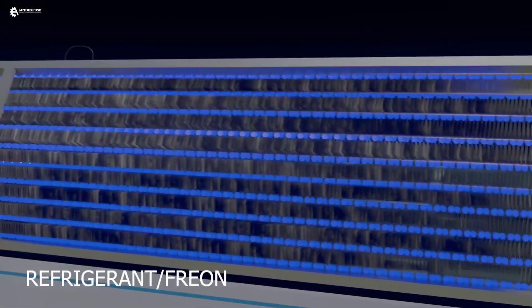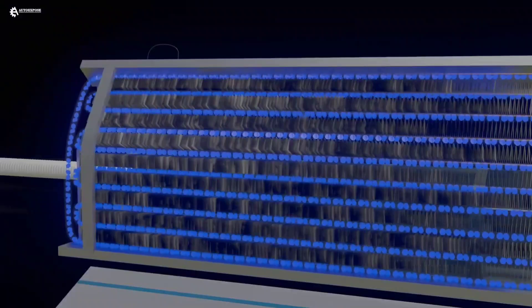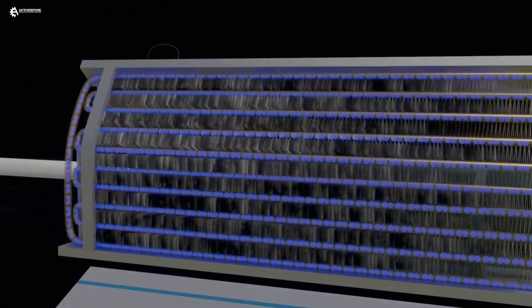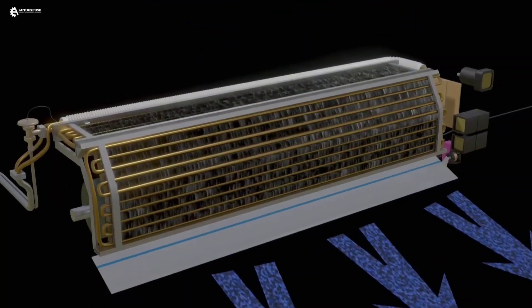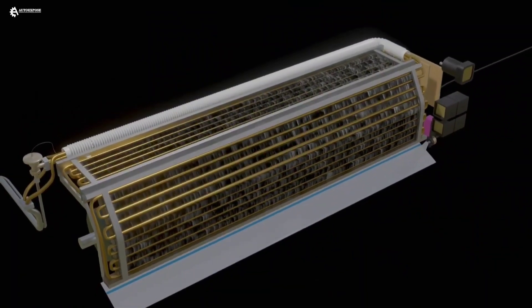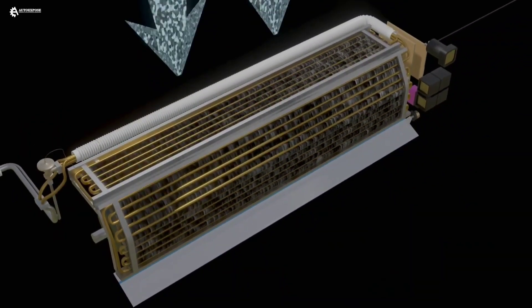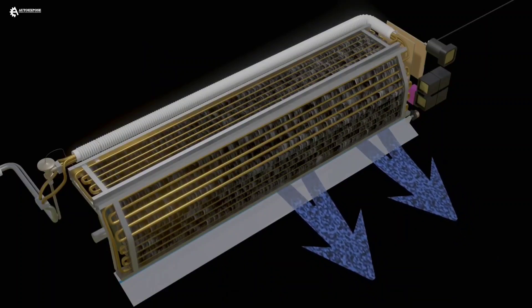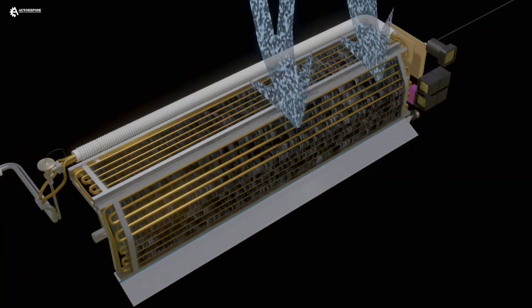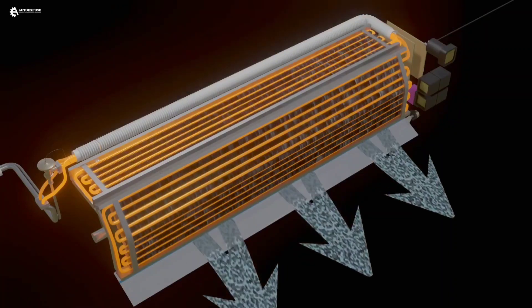Inside this evaporator pipe, there is a special liquid called refrigerant or freon. Freon is a liquid that has a very low boiling point, allowing freon to absorb heat from the room air, which is actually not very hot. When air flows through the gaps in the evaporator, the heat is absorbed by the freon and the air coming out of the AC vents becomes very cold.